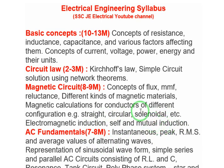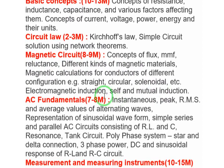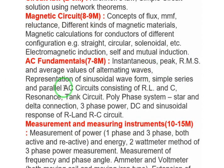AC Fundamentals carries a weight of seven to eight marks. Topics include instantaneous, peak, RMS, and average values of alternating waves. Also covered are resonance, tank circuits, polyphase systems, star-delta connections, three-phase power, and RL and RC circuits.